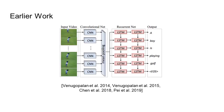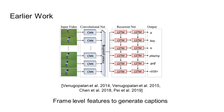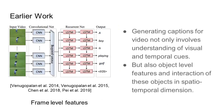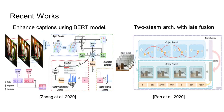Earlier works framed this as an encoding-decoding task where video frames are encoded using CNNs and the features are passed through LSTMs to generate captions. However, this suffers due to lack of local context. Recent works started introducing object features from pre-trained object detectors to capture local context, and further use graph convolutional networks to promote interactions among these local object features.